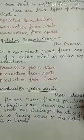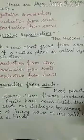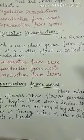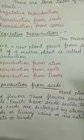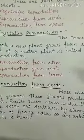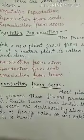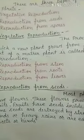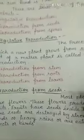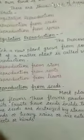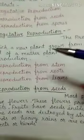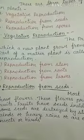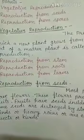The potato is an underground stem. It has eyes on it. This underground stem, when planted, grows into a new plant.